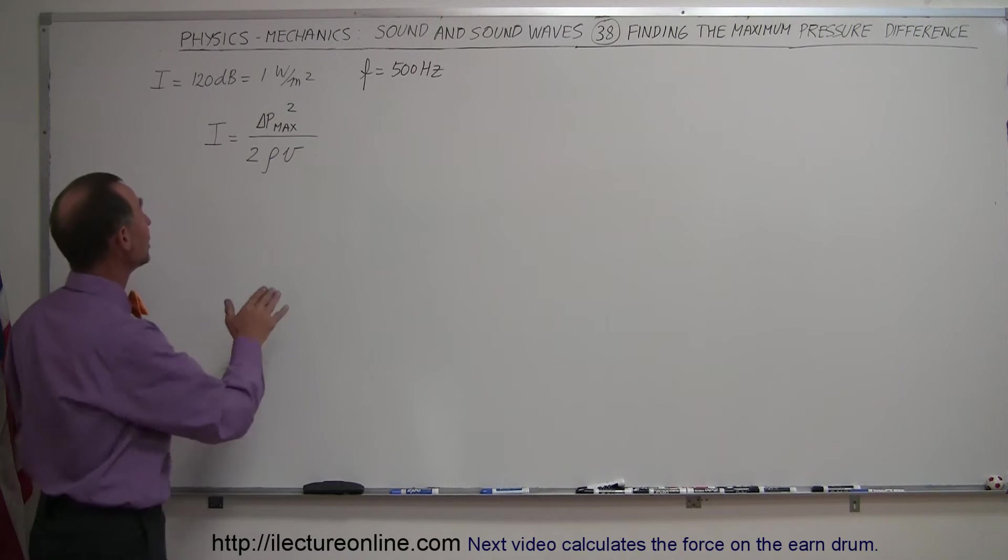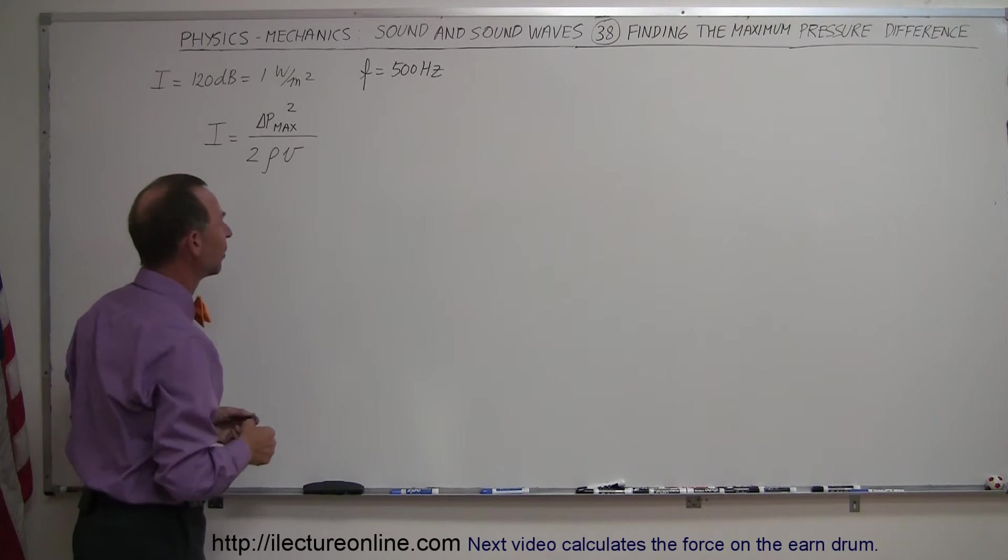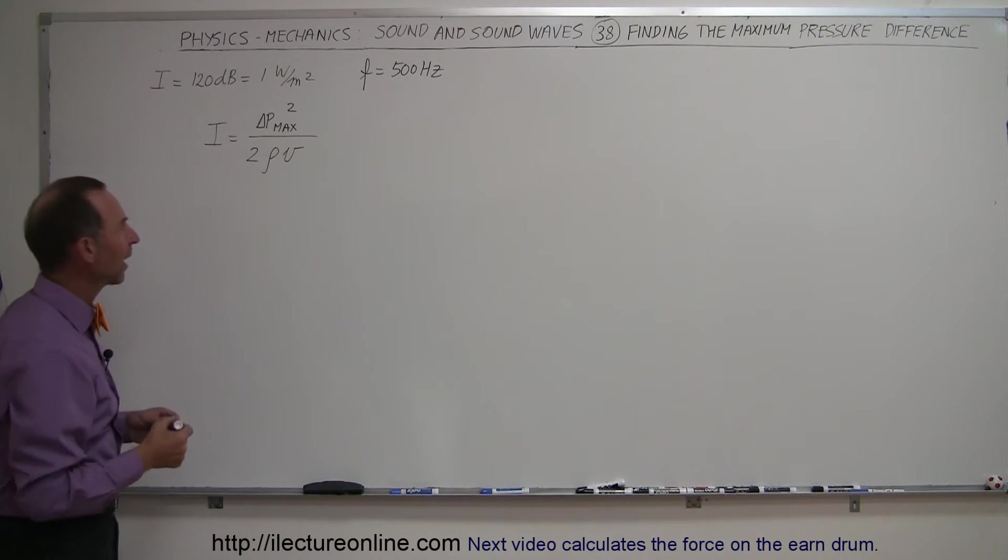The equation we need is that the intensity is equal to the pressure difference squared divided by twice the density of air and the velocity of sound in air.